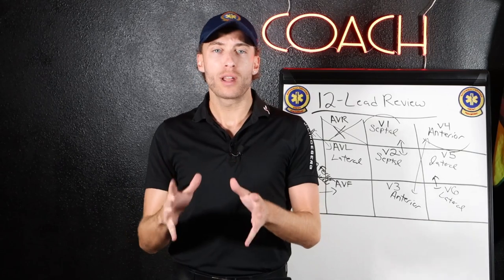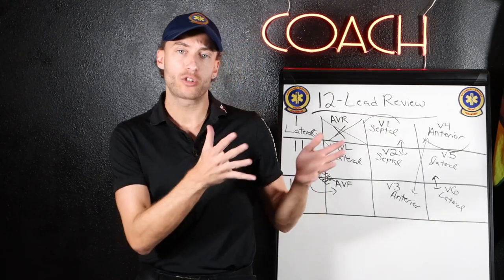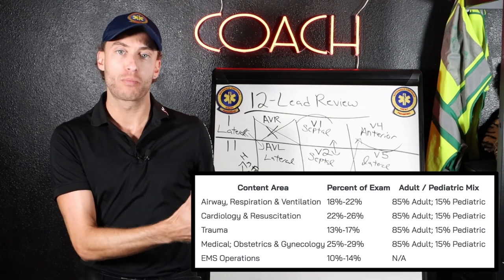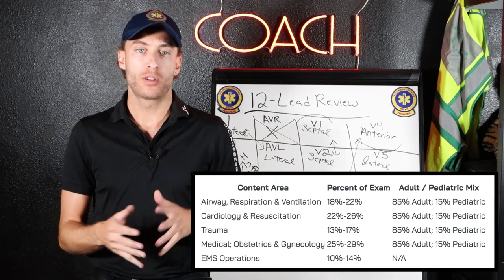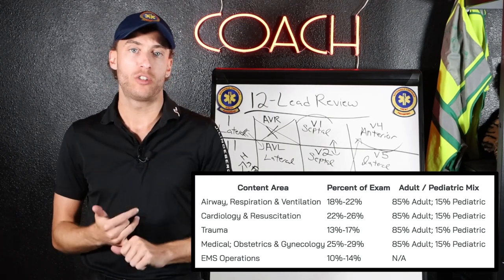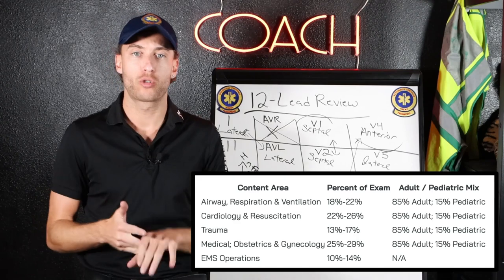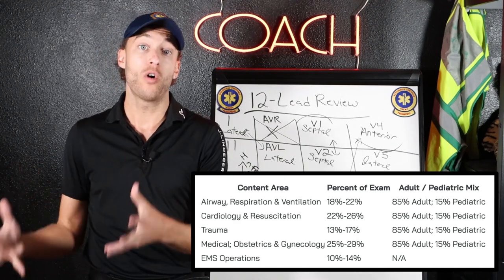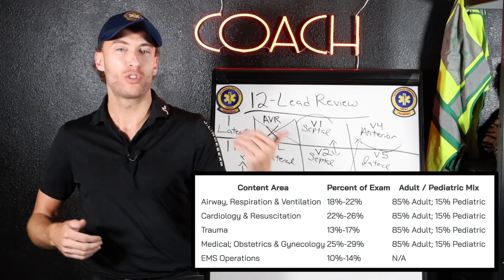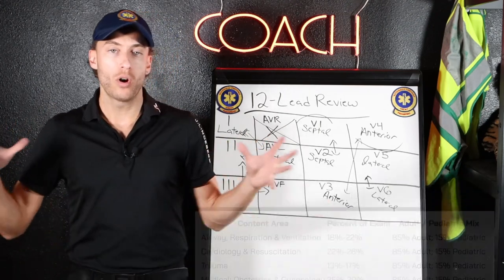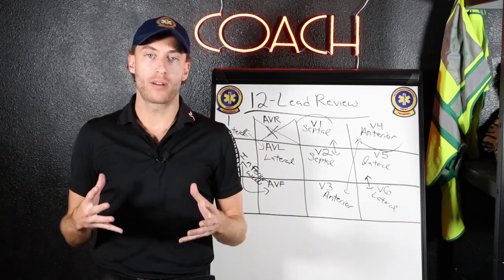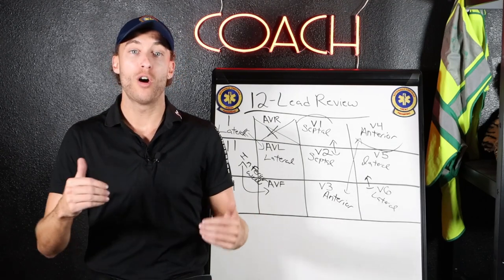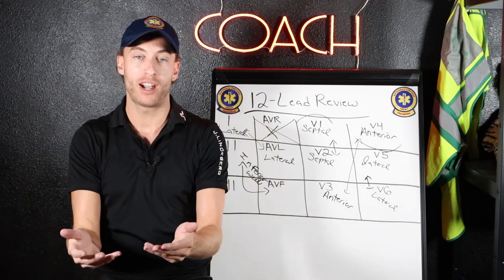The NREMT paramedic exam is broken down into airway, respiration and ventilation, cardiology and resuscitation, trauma, EMS ops, medical, and you'll also have OB/GYN — an adult and pediatric mix. With all that put together, this video is a small portion of what you need to know for the cardiology section.